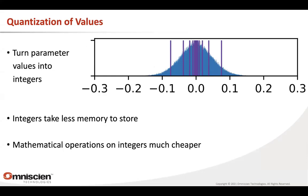Another technique involves quantization. The parameters in these models are floating point numbers — they take up 32 or 64 bits. Dealing with smaller 16-bit floats is still more computationally expensive than integers. With quantization, you take the possible values a parameter can have, break them up into equal-size bins, and give each bin a number. These integers are faster to store, and mathematical operations on integers are much cheaper.